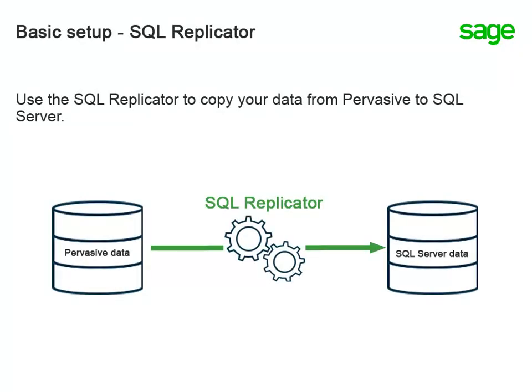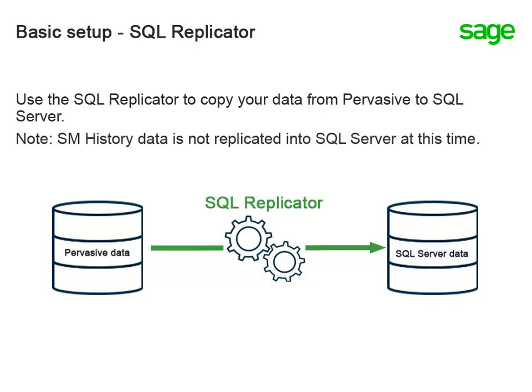You must use the SQL Replicator tool to copy your data from the Pervasive Data Management System into a Microsoft SQL Server database. The Service Management History data is not replicated at this time, so this information is not available for reporting from the SQL Server database yet. You can learn more about the SQL Replicator from the Sage Knowledge Base — use Article 84765.